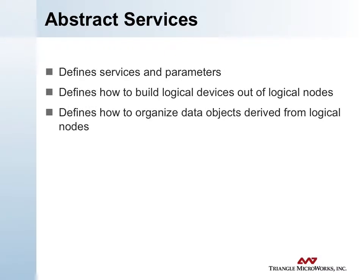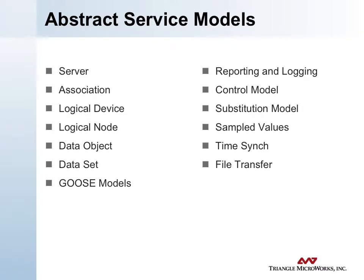Part 7.2 of the document set, the Abstract Communication Service Interface, defines the services and their parameters. It defines how to build logical devices out of logical nodes, and it defines how to organize the data objects derived from the logical nodes. Part 7.2 defines abstract models for a server, associations, and logical devices and nodes. It also covers abstract services like substitution and sampled values, which are common across a wide range of utility industry applications.